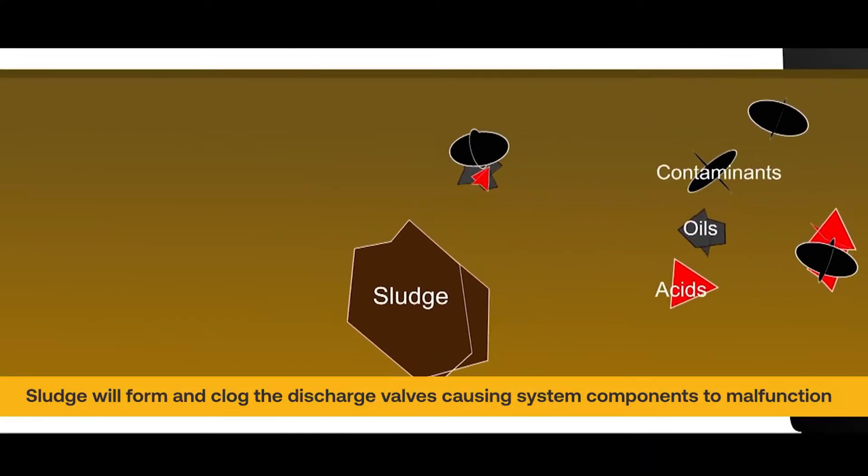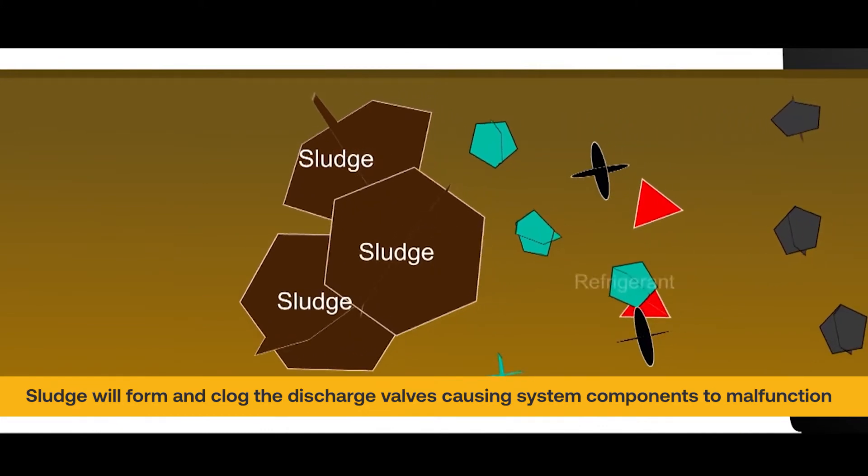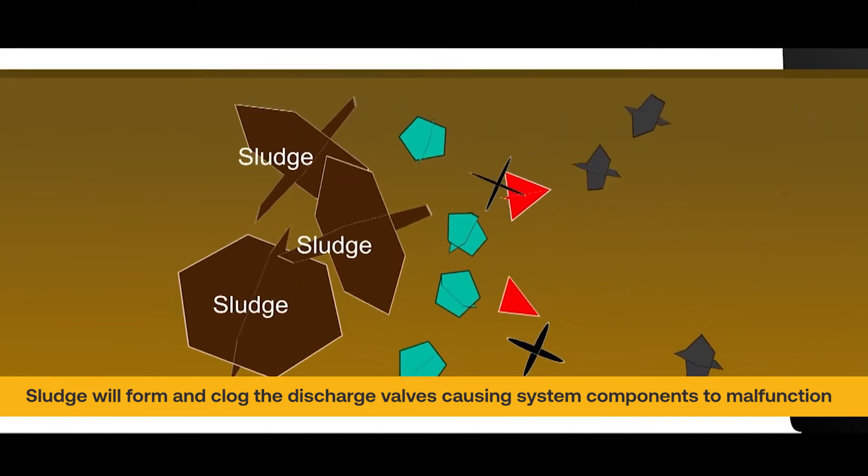Sludge will form and clog the discharge valves, causing expansion devices, filter dryers, and strainers to plug and malfunction.